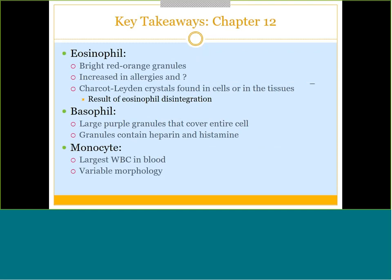Eosinophils are another granulocyte known for their really bright red-orange granules. We see eosinophil increases in allergies and parasitic infections. They also have Charcot-Leyden crystals — a charcoal-laden protein found in their granules. Sometimes on a smear you might see these crystals or granules laying out. Basophils are very few — less than 2% in the bloodstream — but when you see one, they're identified by their very large purple granules that take over the whole cell and cover the nucleus. Inside those granules are heparin and histamine, both playing big roles in allergies.